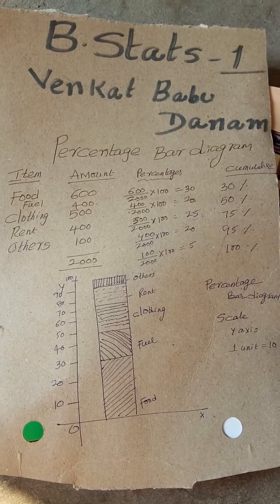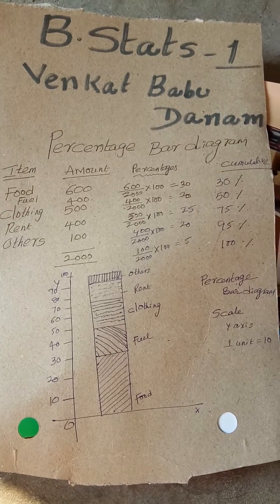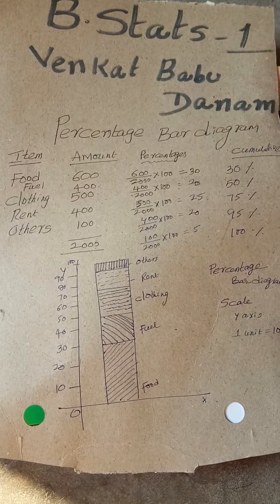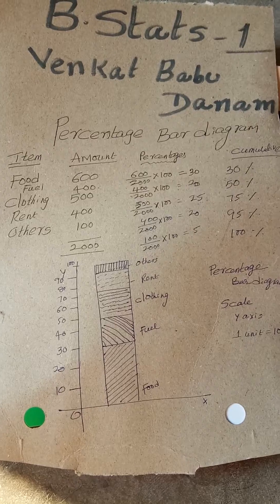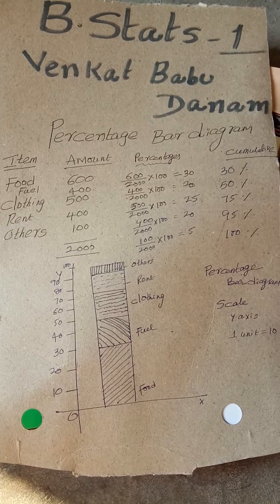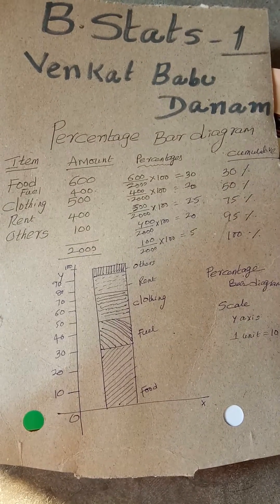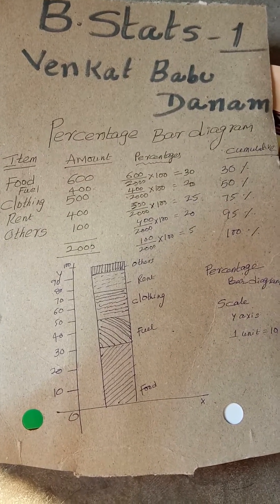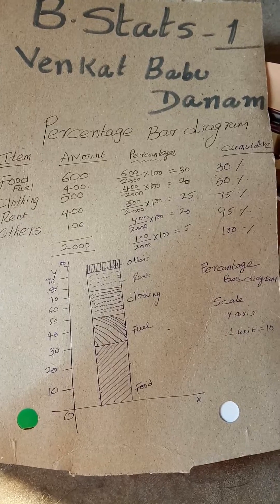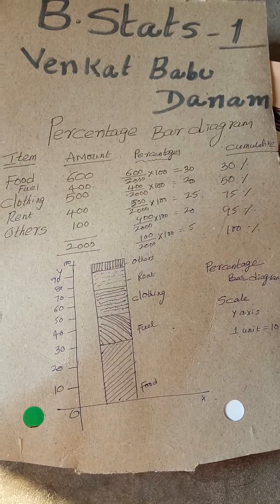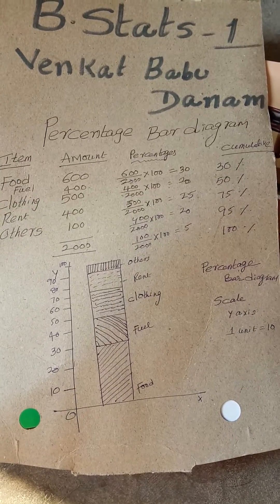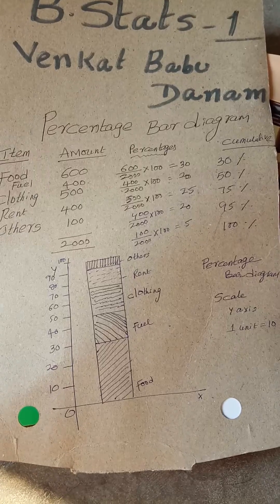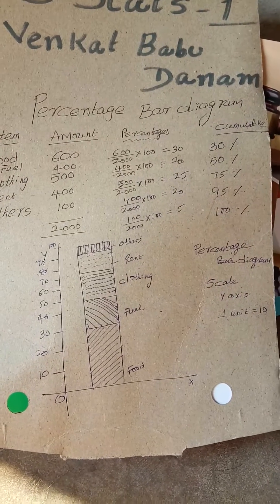My dear students, this is a percentage bar diagram. Here there are some items given: food, fuel, clothing, rent, and others. Amounts are also given, with a total of 2000. If the total is not given, we have to make the total.